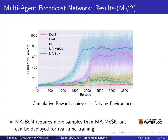The results for MABN are shown in purple. Due to additional constraints on the centralized message generation, there is a reduction in cumulative reward compared to MAMSN, although the final result is still considerably better than Dial and IMS.